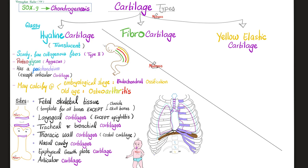Do they have proteoglycans? Yes — it's called aggrecan in hyaline cartilage. Are they covered by perichondrium? Yes, with the exception of the articular cartilages. Other than that, all of your hyaline cartilages are covered by a layer of perichondrium.